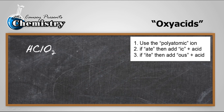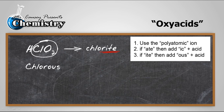Let's do another one. Here we have hydrogen chlorite, so that's the chlorite ion. It ends in I-T-E, so we add 'ous' and the word 'acid': chlorous acid. And it's just that simple.